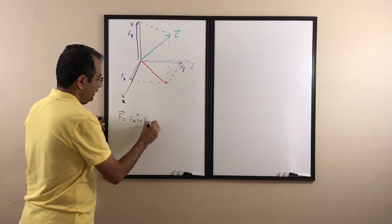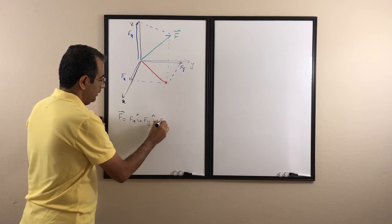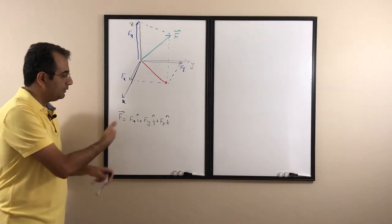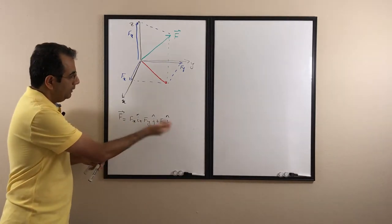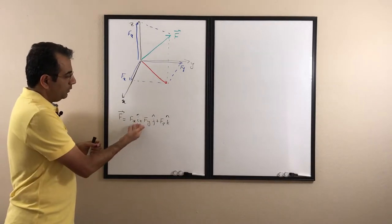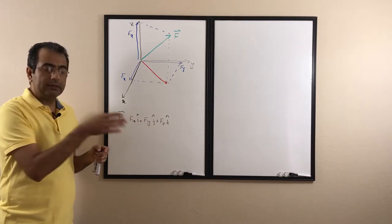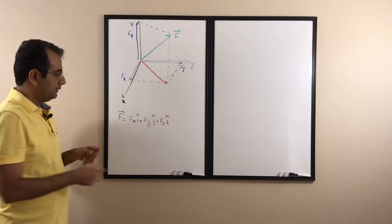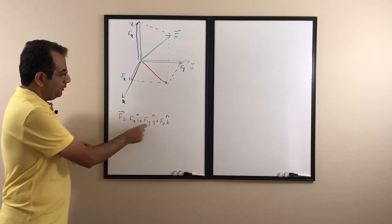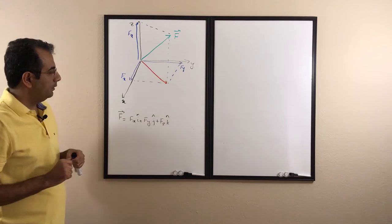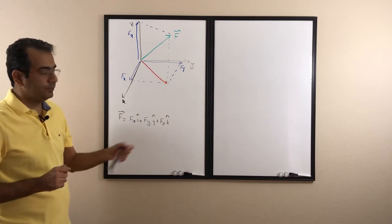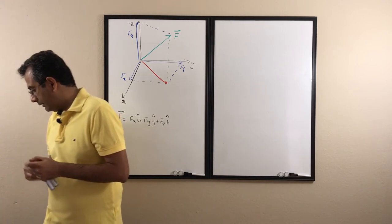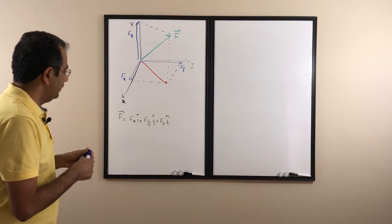When we want to find these components, we write vector F as Fx·i plus Fy·j plus Fz·k. This is the same as 2D, but now we add the k term. Just as i and j are unit vectors along x and y, k is the unit vector along the z-axis. Now, how do we find Fx, Fy, and Fz — the components along each axis?